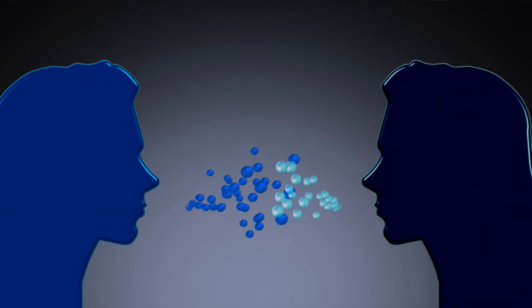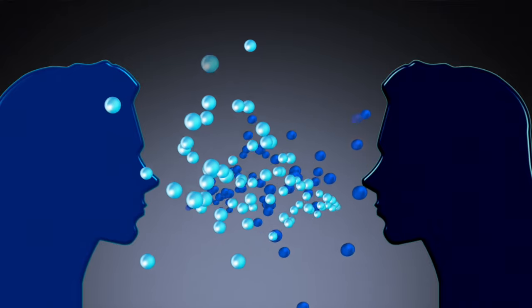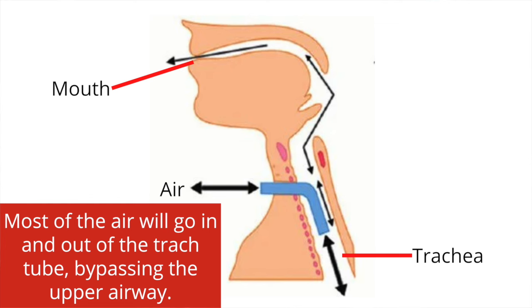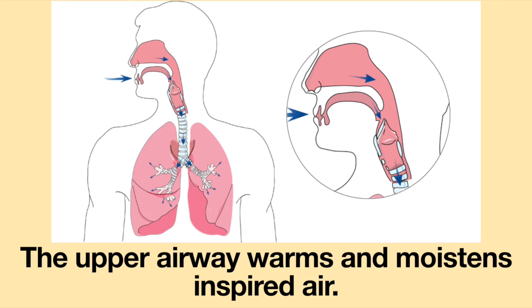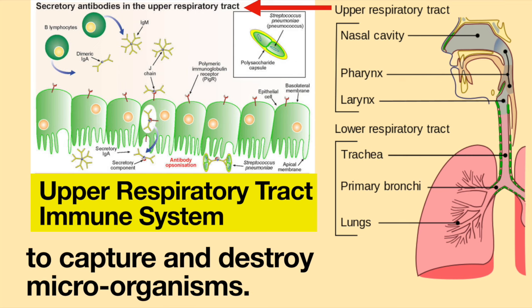There is a high susceptibility for infection in people with tracheostomy tubes due to the loss of function of the upper airway. Using a tracheostomy tube means that most of the air is inhaled and exhaled through the tracheostomy tube, which bypasses the upper airway. The upper airway warms and moistens inspired air. It also has many defense systems in place to capture and destroy microorganisms.